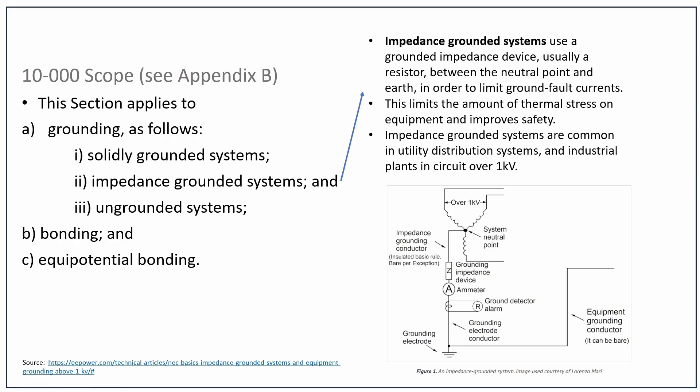There are rules we'll go over for impedance grounded systems — they have to be serviced by qualified individuals, and they also need to have a ground fault detector as well, an alarm that tells you a fault has happened. With solidly grounded systems the neutral was grounded directly without any resistance; with impedance grounded systems, the neutral is grounded but in series before it gets to earth there's either a resistor or some type of coil.